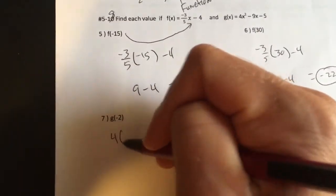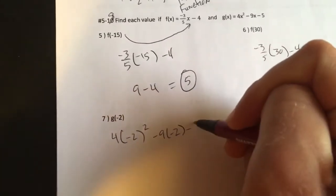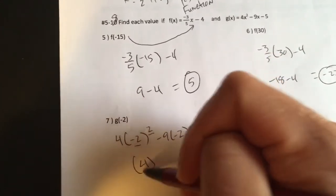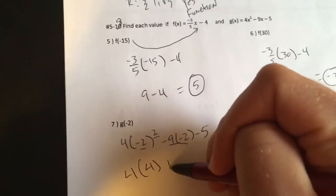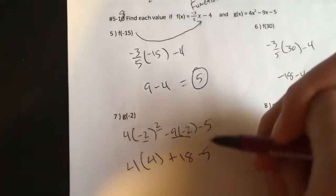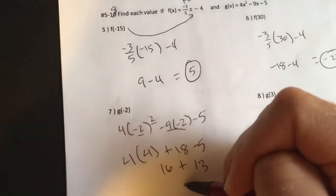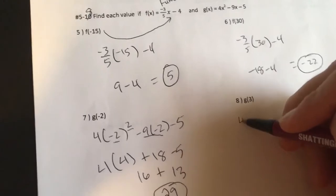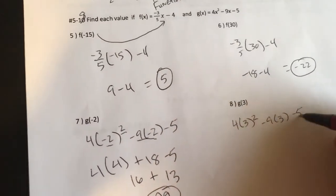All right. G of negative 2. So I'm going to do 4 times negative 2 squared minus 9 times negative 2 minus 5. Guys, negative 2 squared. I got to do that first. That's 4. 4 times 4 will come later. A negative times a negative right here. Positive 18 minus 5. It's going to give me 16 plus. This is 13.